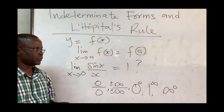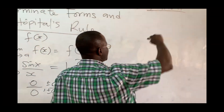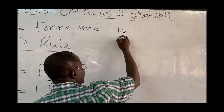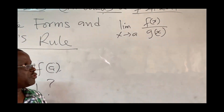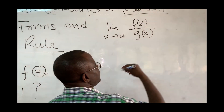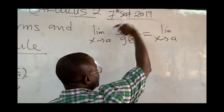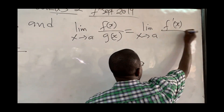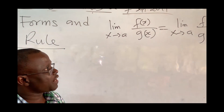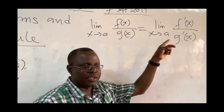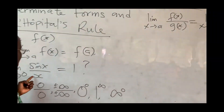When you encounter an indeterminate form, you use L'Hôpital's rule to find the limit. L'Hôpital's rule says: if you have the limit as x approaches a of f(x)/g(x), and this gives an indeterminate form, then you take the limit as x approaches a of f'(x)/g'(x) — that is, differentiate the numerator and denominator separately with respect to x. Once you do this, you can find the limit by substitution.